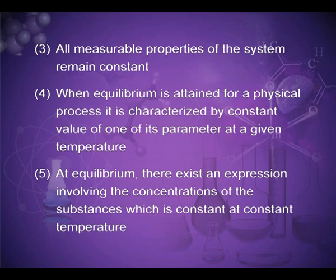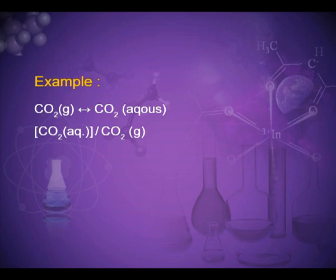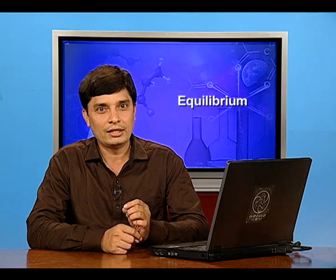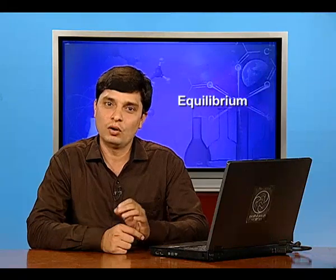Fifth, at equilibrium there exists an expression involving the concentration of the substances which is constant at constant temperature. For example, CO2 will transform from gaseous state to aqueous. The concentration of CO2(aq) divided by the concentration of CO2(g) is constant at constant temperature. This constant is called the equilibrium constant K.